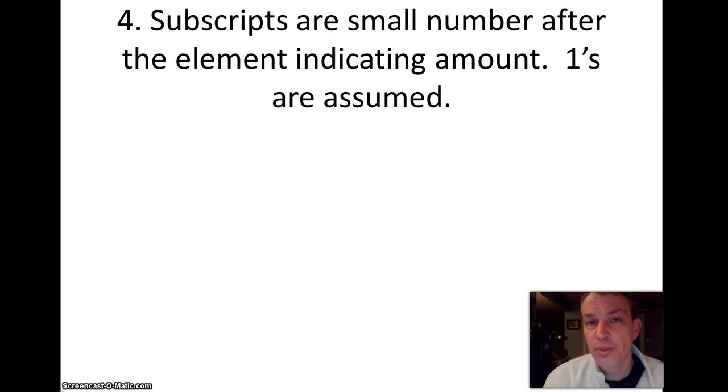The fourth point is we use these things when we're putting together the formulas called subscripts. These tell us how much we have of each atom. If you don't see a subscript, that means there's the number one there. They always come after the element, and they're on the bottom. They're not exponents. And they aren't big numbers in front either.